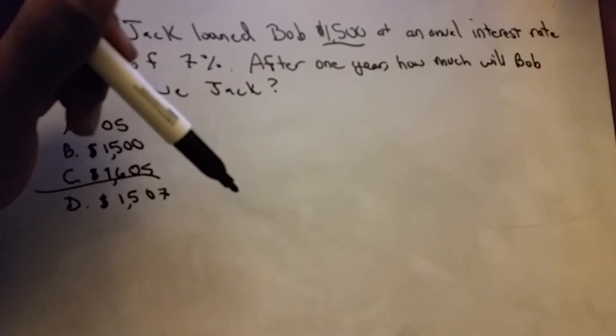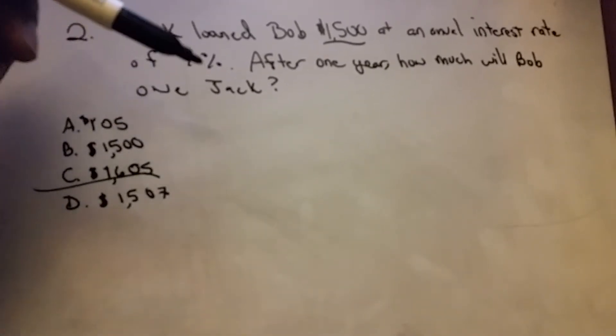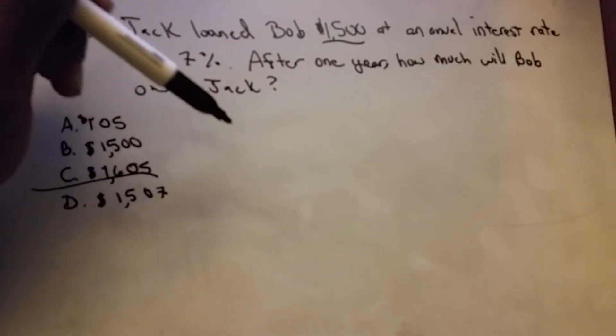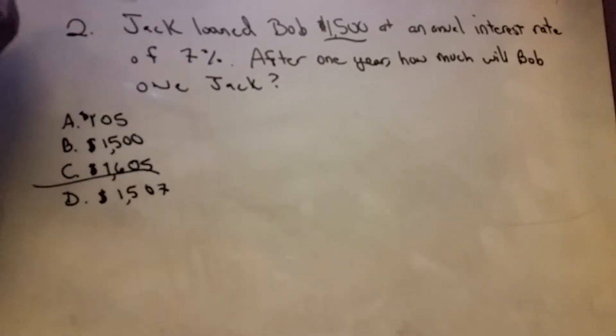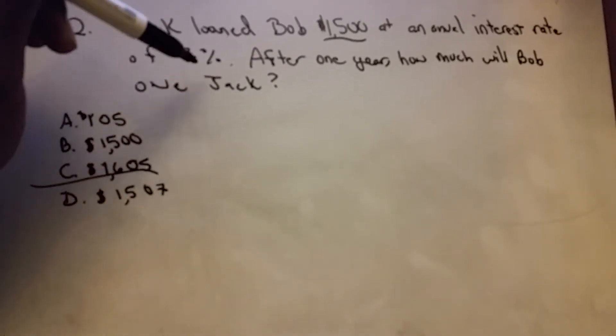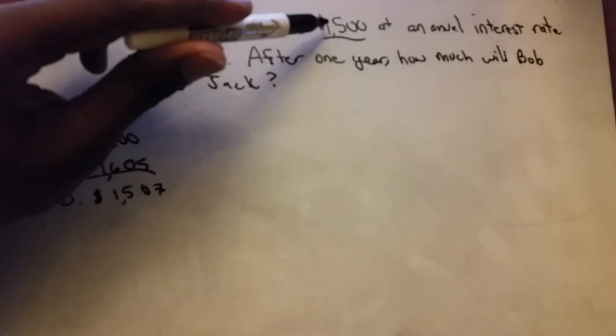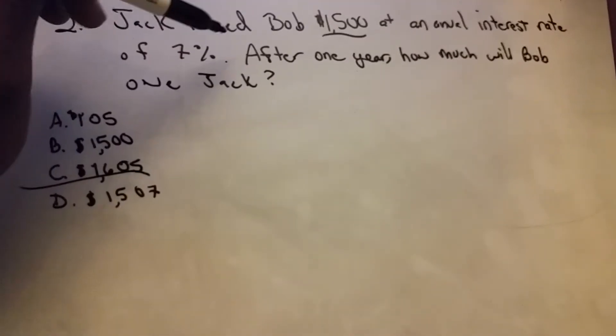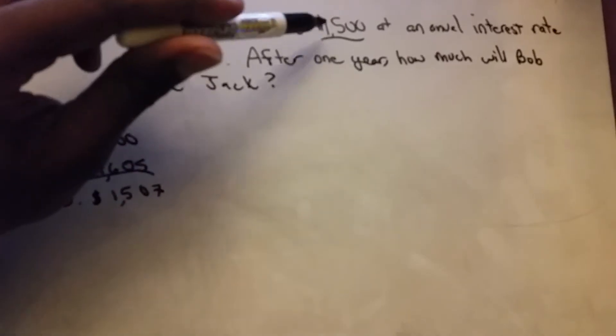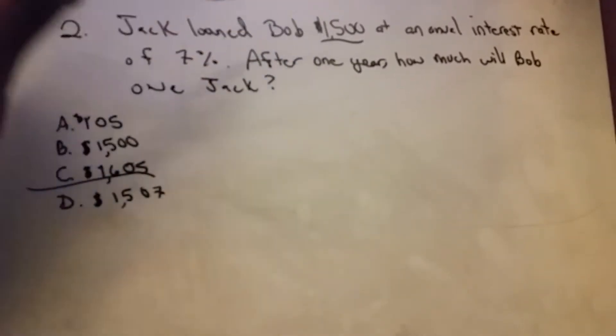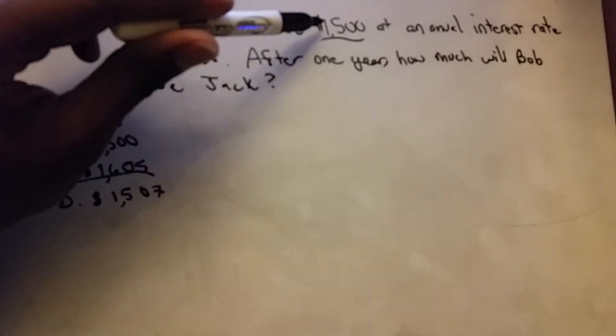Interest is: I'll give you the money if you're going to give me more than what I gave you originally. So he's saying I'm going to give you $1,500 if you pay me back that $1,500 plus 7% of that $1,500.